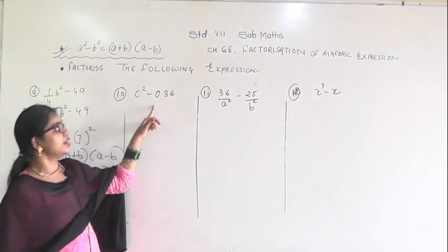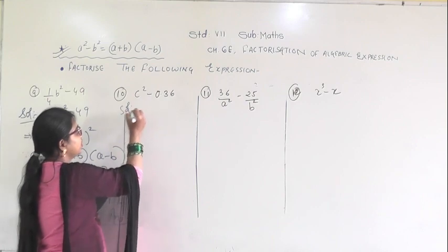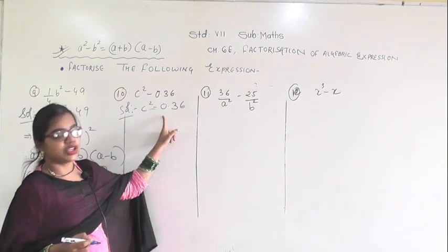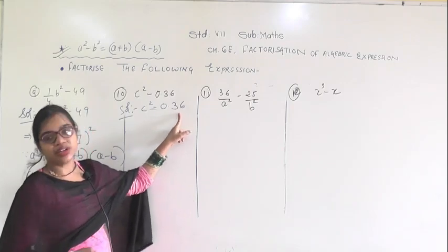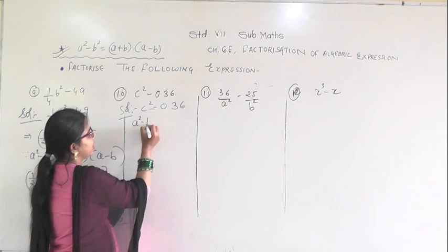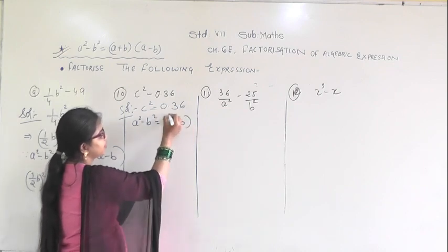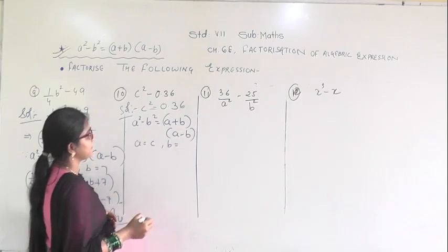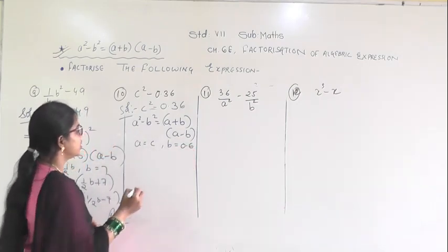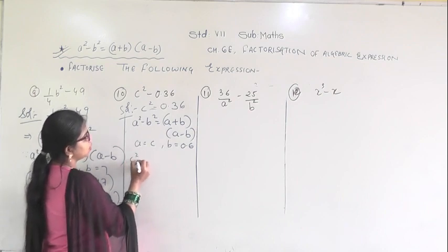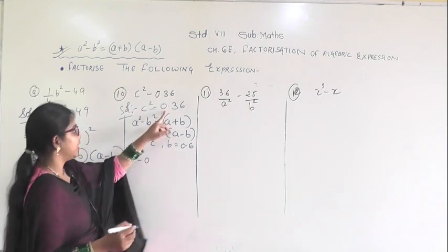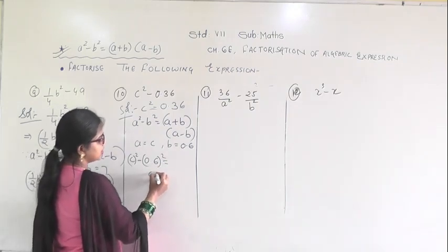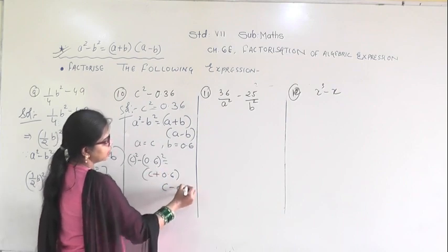The next question is c squared minus 0.36. 0.36 can be written as 0.6 squared, since 0.6 times 0.6 equals 0.36. Using a squared minus b squared equals (a plus b)(a minus b), where a equals c and b equals 0.6, substituting gives c squared minus (0.6) squared equals (c plus 0.6)(c minus 0.6).